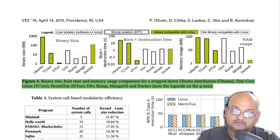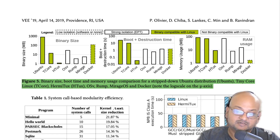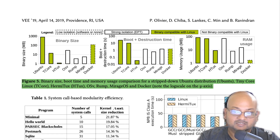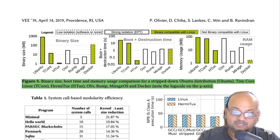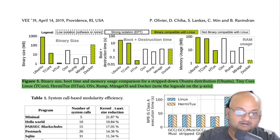If you look at RAM usage, Hermitux comes in much smaller than a regular Linux distro, but very comparable to some other unikernel and hypervisor solutions. But the additional dimension to look at here is whether these other solutions are binary compatible with Linux or not. The green bars represent things that are binary compatible with Linux, and you can see how within that category, Hermitux provides much better performance in terms of binary size as well as boot time and RAM usage.